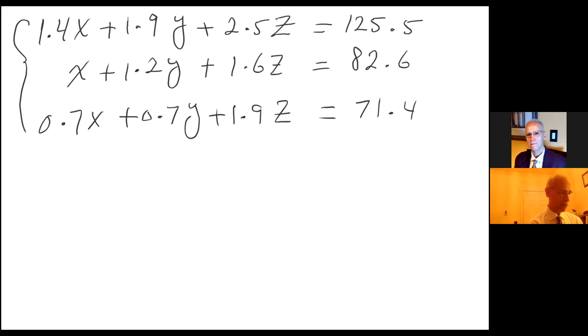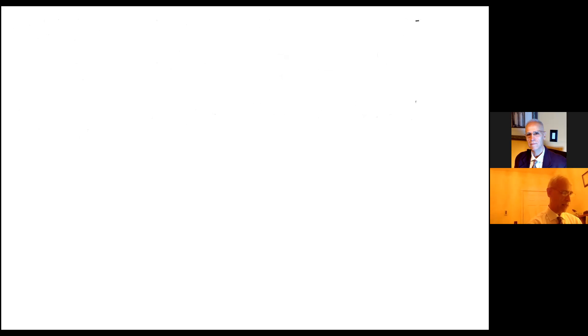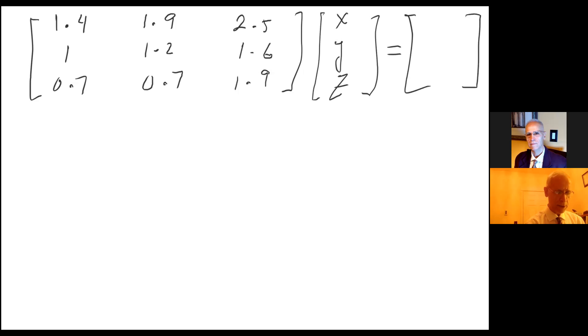So I'm going to rewrite this in terms of matrices. Let me go ahead and go to the next page. So I have the coefficients are 1.4, 1.9, 2.5, 1, 0.7, 1.2, 0.7, 1.6, 1.9. And here is my x, y, and z. And that should equal 125.5, 82.6, and 71.4.